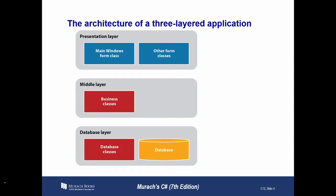This slide is an important one. What we've been doing so far is primarily working in the top layer — the presentation layer — where we've got our forms and GUI work. At the bottom, we haven't gotten into the database layer yet. The middle layer is an interface between the database layer at the bottom and the presentation layer at the top. It includes classes that correspond to business entities like products or customers, and classes that implement business rules like discount rates or credit policies. When classes represent business objects, they're called business classes.